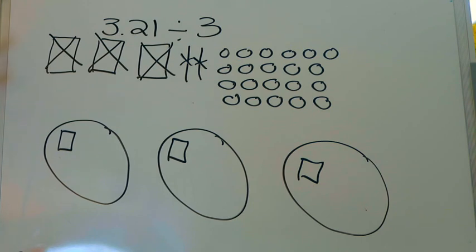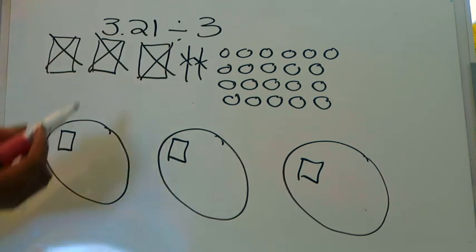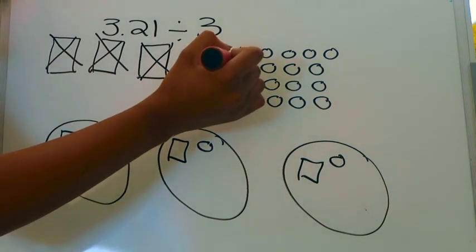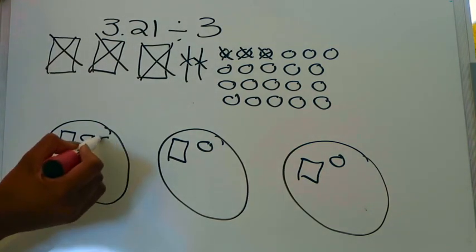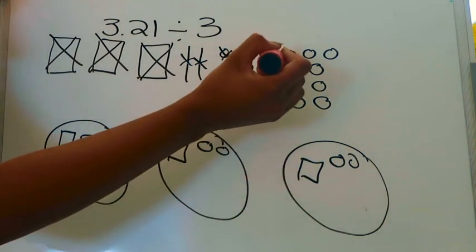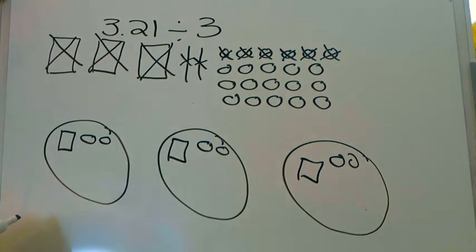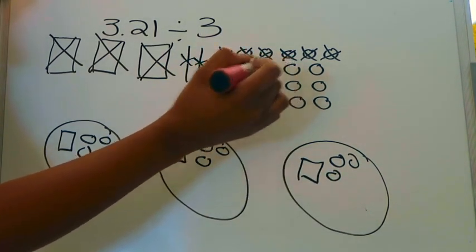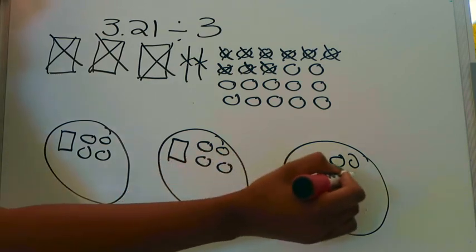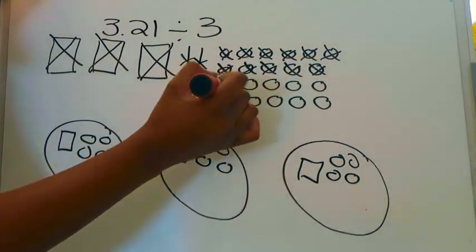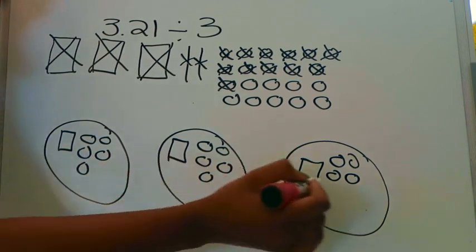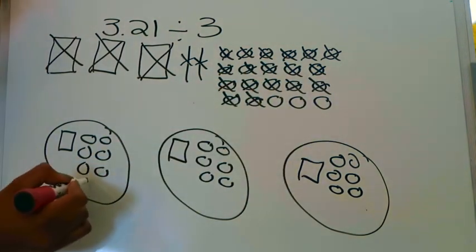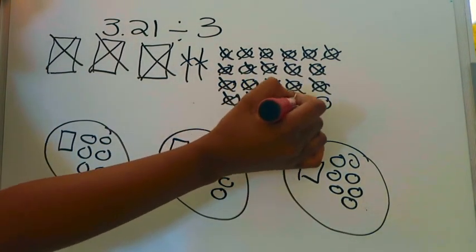Taking my time, one at a time, I distribute the hundredths by placing one in each of the three groups and crossing them out as I go. I continue this in rounds of three until all hundredth pieces have been equally distributed among all three groups.